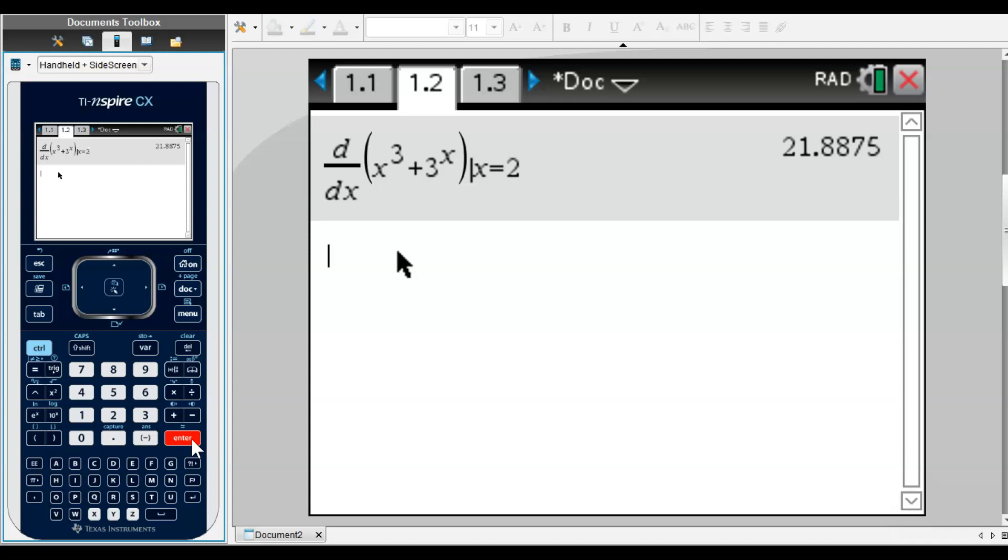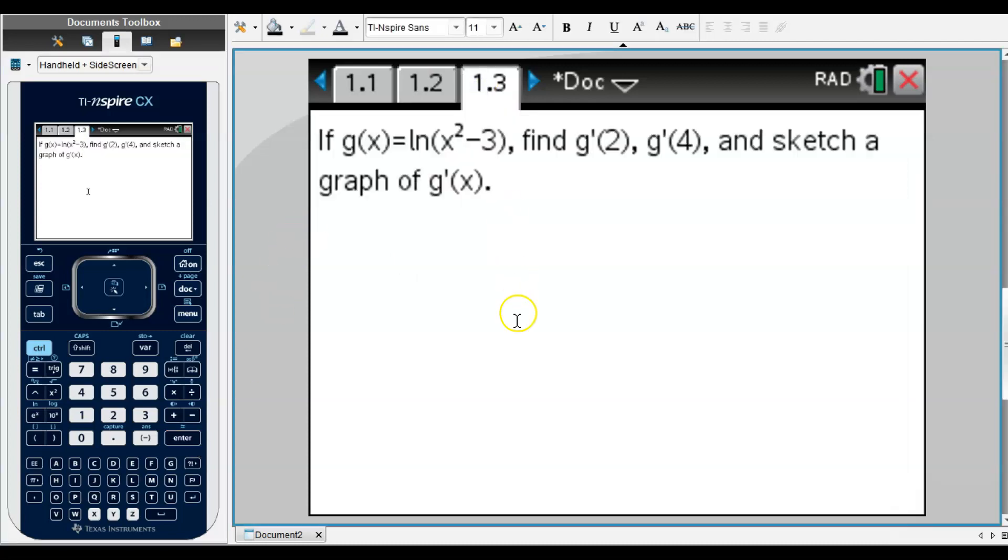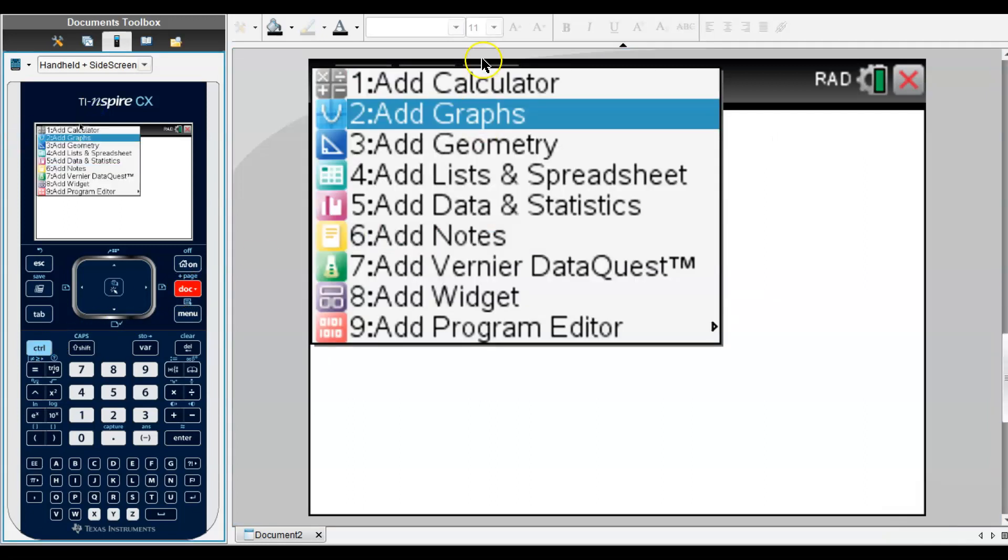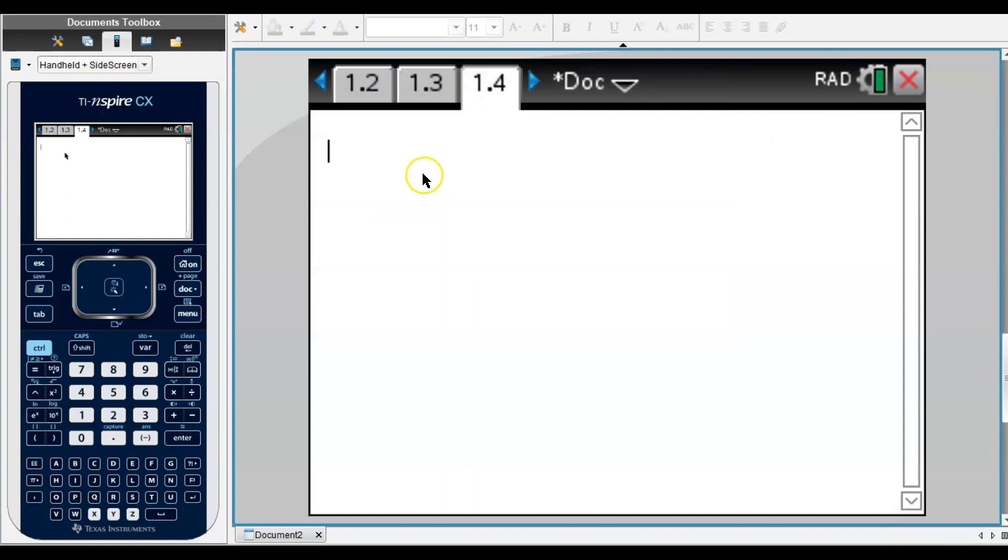Let me show you the next example. It says if g(x) = ln(x² - 3), find g'(2), g'(4), and sketch the graph of g'. So I'm going to open up a new calculator page.